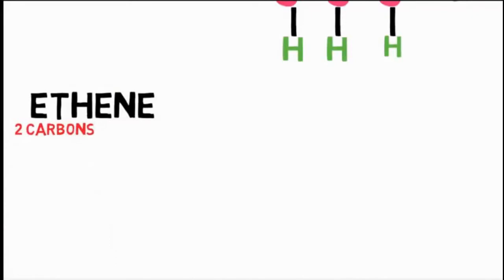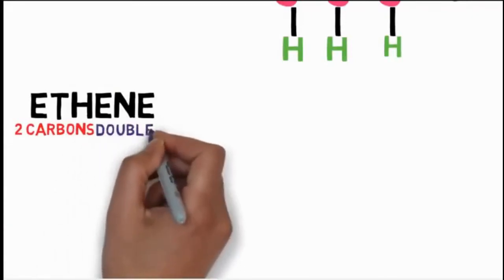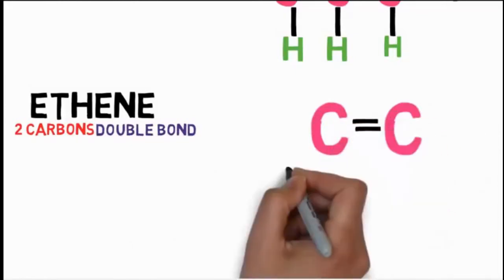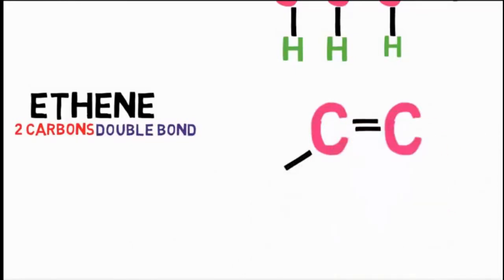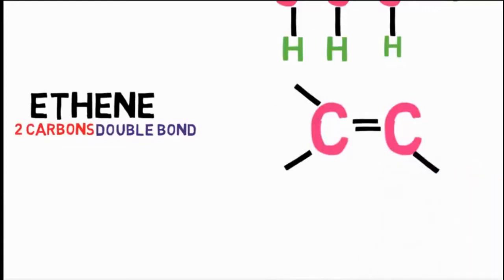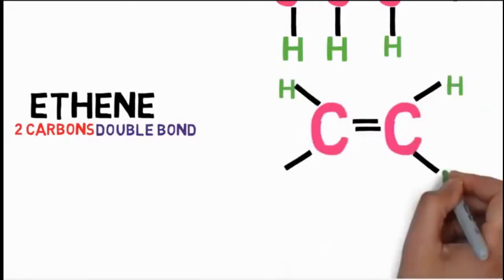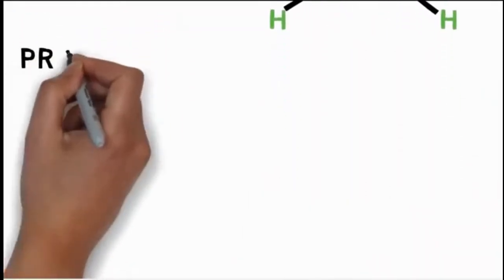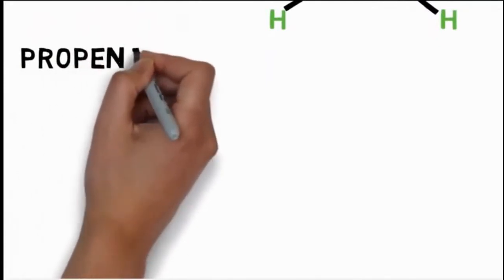Ethene: it has prefix 'eth' meaning two carbons and 'ene' meaning carbon-carbon double bond. Insert a double bond between the carbon pair. Each carbon already has two bonds and two remain. Add hydrogen to the remaining bonds. This is our ethene ready.